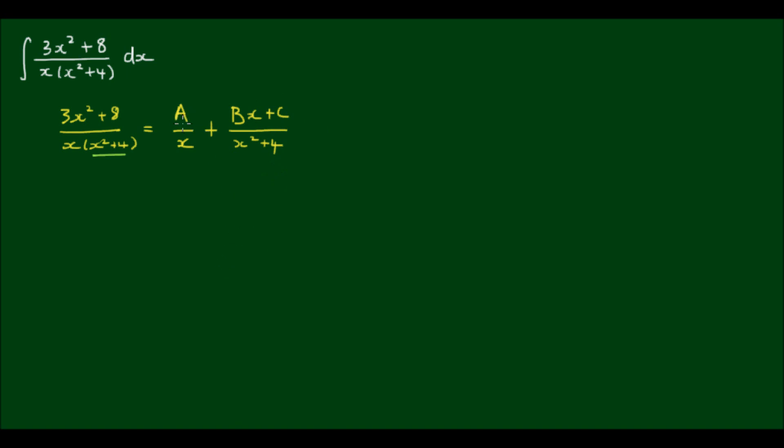So now we have to solve for the constants A, B, and C. And in order to do that, we have to form a common denominator between the two partial fractions. The easiest way to do that is to multiply these two factors together, and then cross multiply.